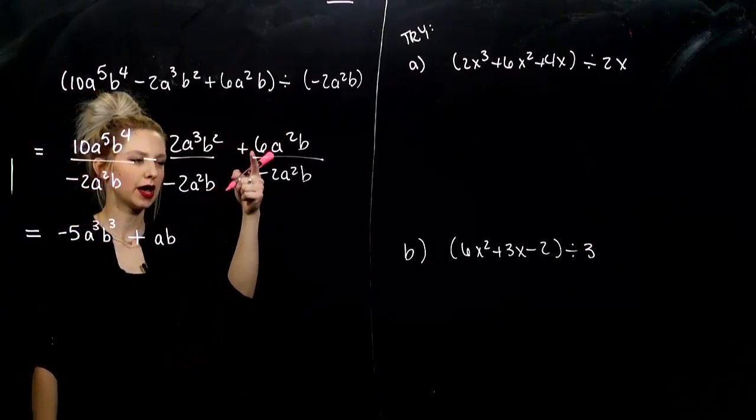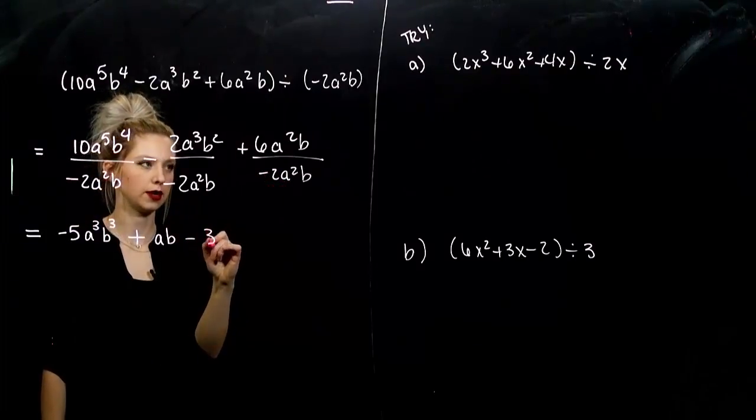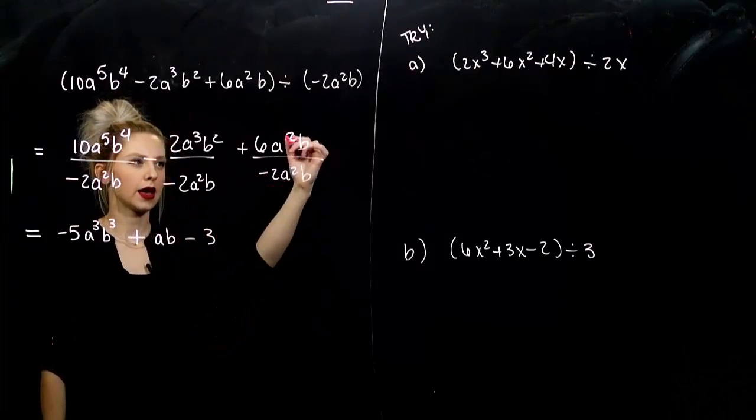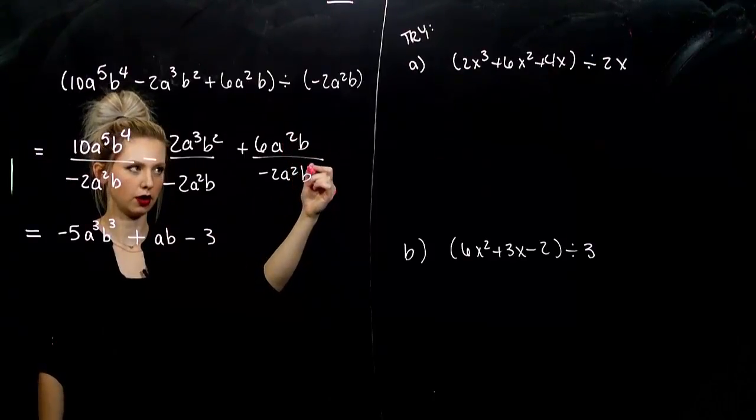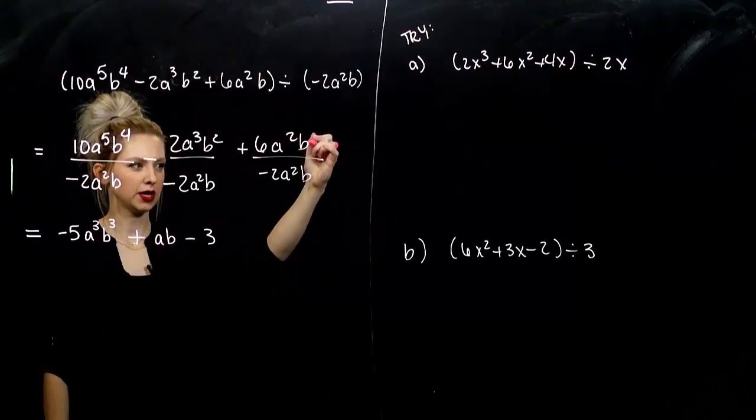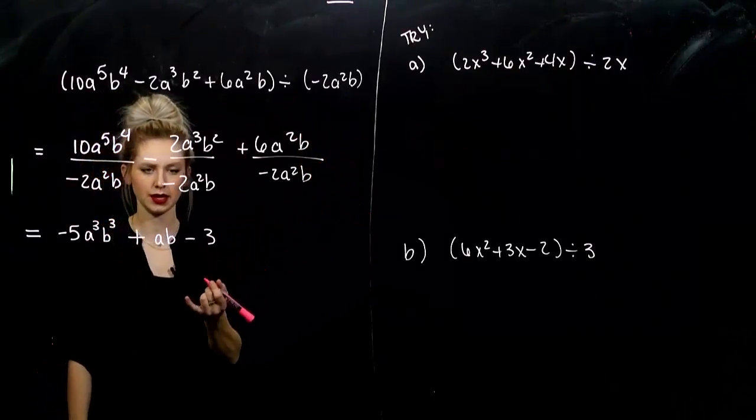And the last, positive 6 divided by negative 2 will give me negative 3. And I have how many a's? 2 up top, 2 down below. So, they're going to be gone. And I've got 1b up top and 1b down below. Those are going to be gone. We're just left with negative 3.